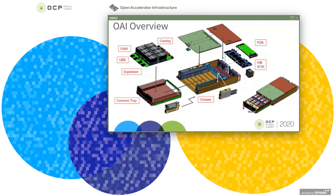When we started OCP Accelerator Infrastructure, or OAI, we set up multiple chapters to have specifications and subgroups to develop them. You are probably already familiar with the OCP Accelerator Module, or OAM, specification, and also probably familiar with the Universal Baseboard, or UBB, specification. Several other specs have been released as well, which will be reviewed in other talks within the OAI track.